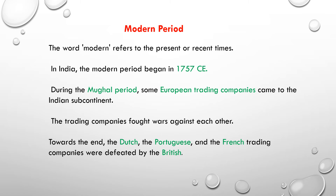The word modern refers to the present or recent times. In India, the modern period began in 1757 CE and European trading companies came to India. The trading companies fought against each other towards the end. The Dutch, the Portuguese, and the French trading companies were defeated by the British.